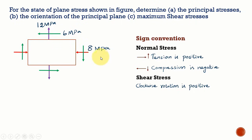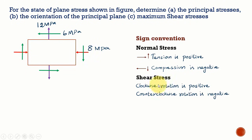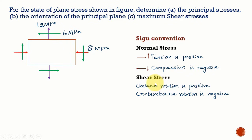We have to examine each face to determine whether shear stress creates clockwise or counter-clockwise rotation. On the X-face, the two shear stresses create clockwise rotation, so we consider this shear stress as positive. On the other hand, counter-clockwise rotation is considered negative. In our problem, the two shear stresses acting on the Y-face create counter-clockwise rotation, so we consider that as negative. This is all about the sign convention to remember while constructing Mohr's circle.